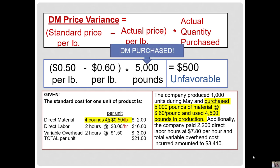One thing to note: we did use the 5,000 pounds purchased, not the 4,500 pounds used in production, to make this calculation. Also observe that we want to calculate these variances in a total dollar amount. It's not sufficient to tell management we paid 10 cents a pound too much for materials — we want to tell them the total dollar impact on cost, and this holds true for all of the variances.